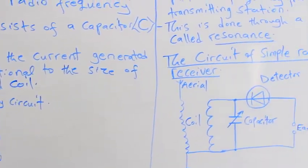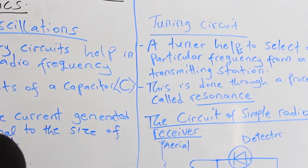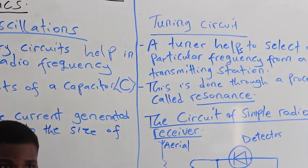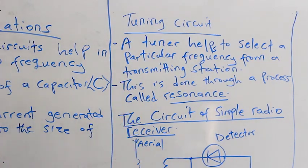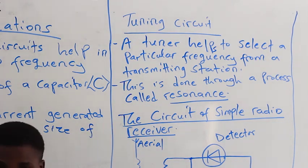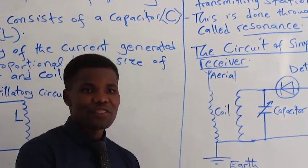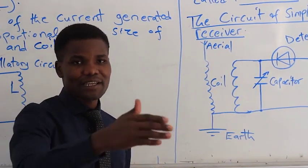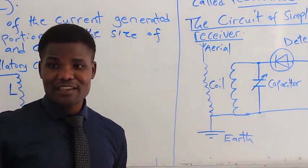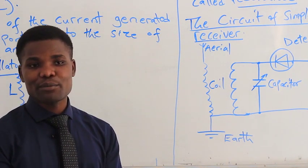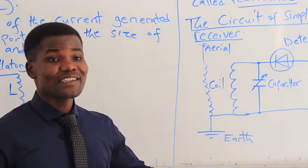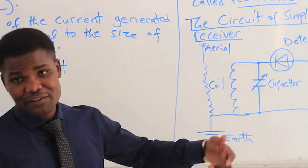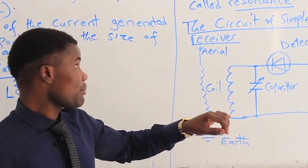Moving to the tuning circuit — tuning means you need to select a particular frequency from a range of frequencies sent to your receiver. A tuner helps to pick a particular frequency from a transmitting station. For example, Radio Argesia has a given frequency it emits into the atmosphere. That frequency is transmitted through space, and once it reaches the receiver part of your radio, such as the aerial or earphone, it picks the one frequency tuned in your radio so you can receive the information.